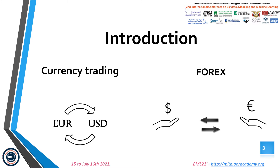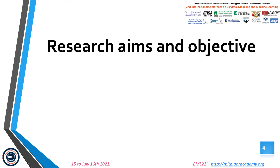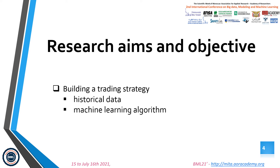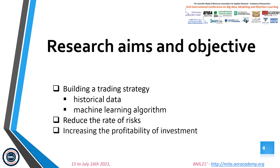Due to the forced fluctuation of the market, traders find it so hard to know if the prices will go up or will go down. In our research, we have tried to resolve this problem by creating a trading strategy based on machine learning algorithms and historical data. A successful trading strategy in forex should reduce the rate of risks and increase the profitability of investment by considering the economical and political factors and avoiding emotional investment.